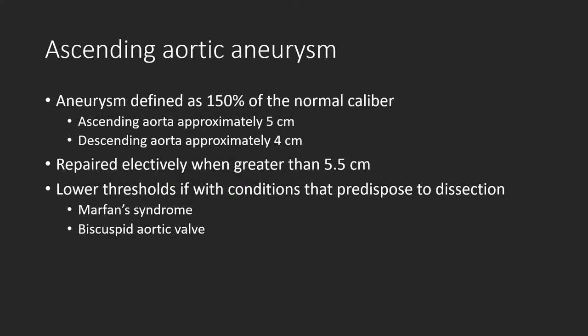An aneurysm is defined as being greater than 150% of the normal vessel caliber. The question then becomes what is a normal vessel caliber, and that is not a straightforward answer with regard to the aorta. Caliber varies by age, sex, body surface area, and the part of the aorta measured — ascending versus descending. As noted in our recent white paper, the ascending and descending thoracic aortas are said to be aneurysmal when measuring greater than 5 and 4 cm respectively. They are often repaired electively when measuring greater than 5.5 cm, unless the patient has risk factors such as Marfan's or bicuspid aortic valve — conditions that predispose these individuals to dissection.